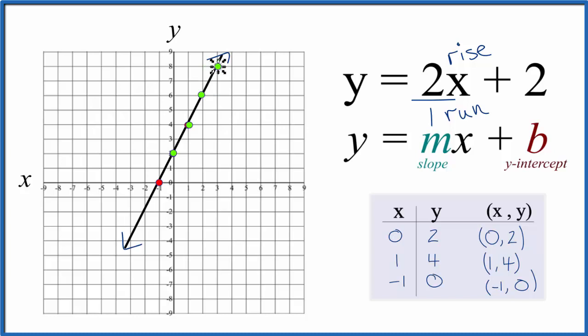Likewise, we could go in the opposite direction. Instead of rising, we could go down 1, 2, and over 1 in the opposite direction—1, 2, over 1. You can see that all of these points are on our equation y = 2x + 2.